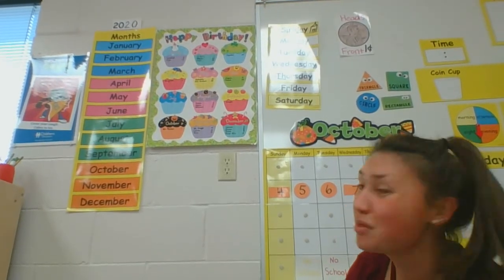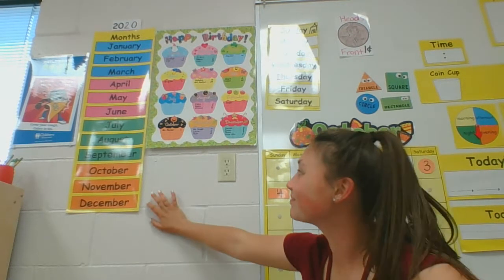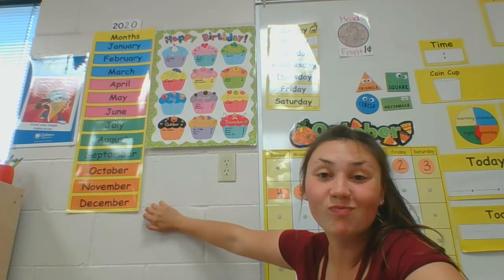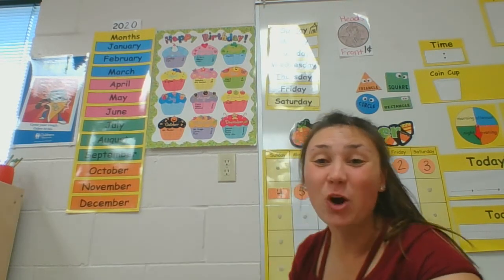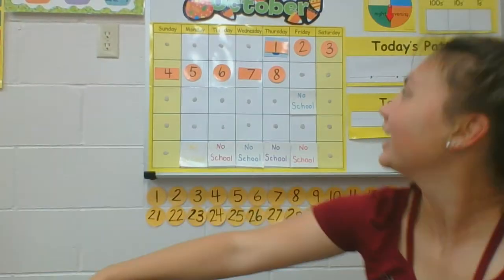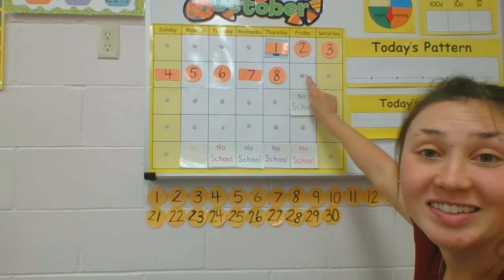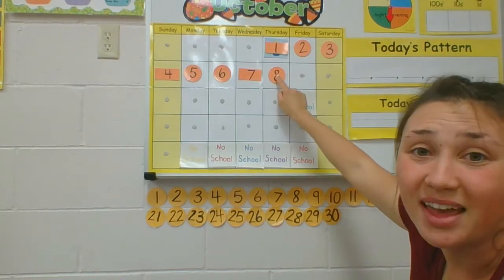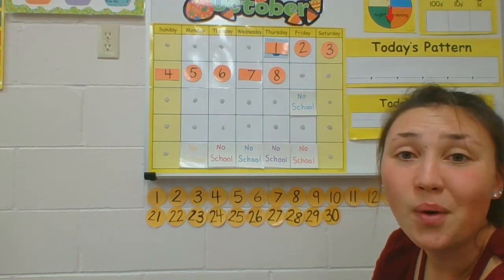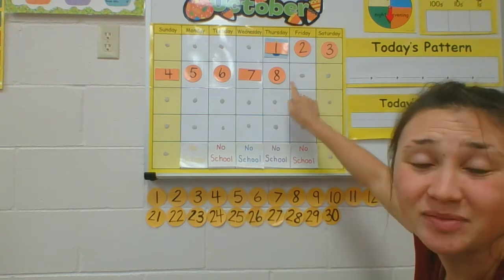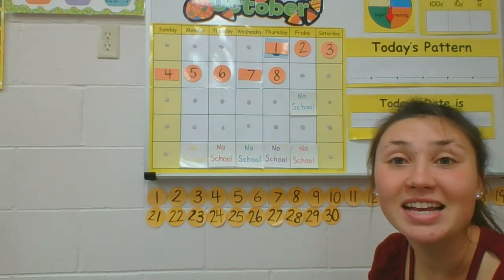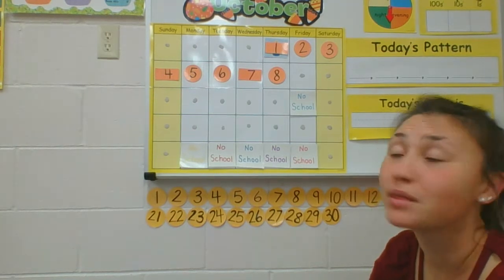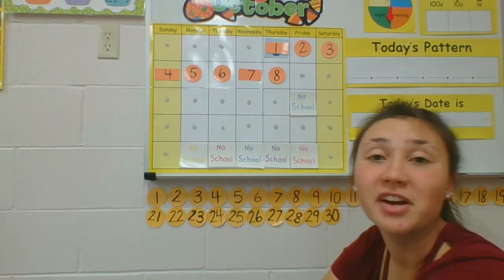And what month are we in? It's this one — October. We're in October. What day in October? Let's look. Today is this day, and yesterday was the eighth. So what does that make today? What comes after eight? Yeah, nine. Today is October ninth.